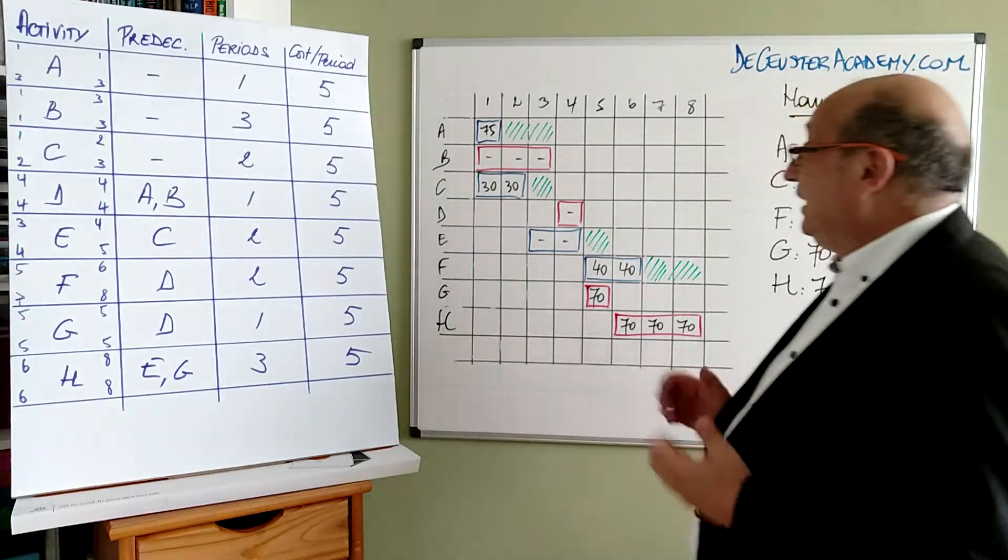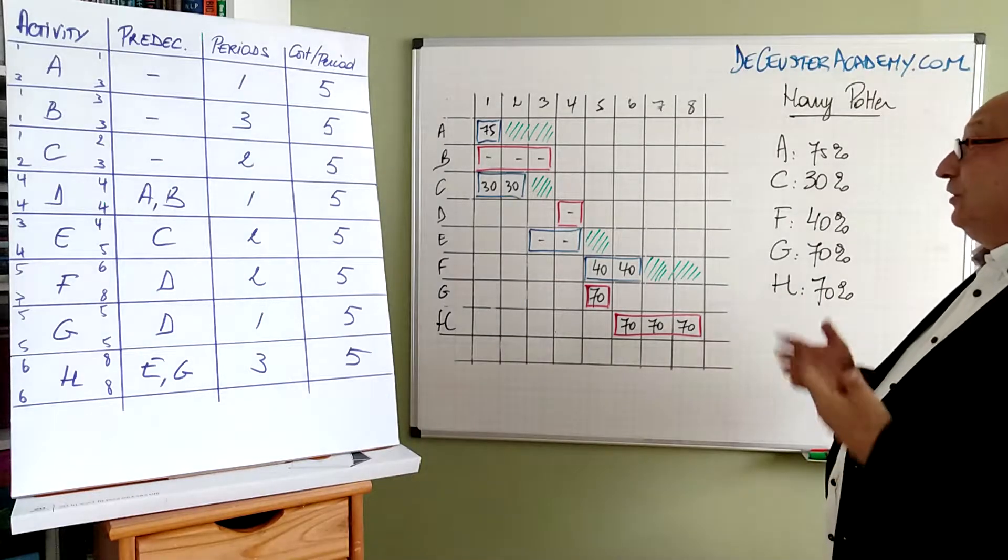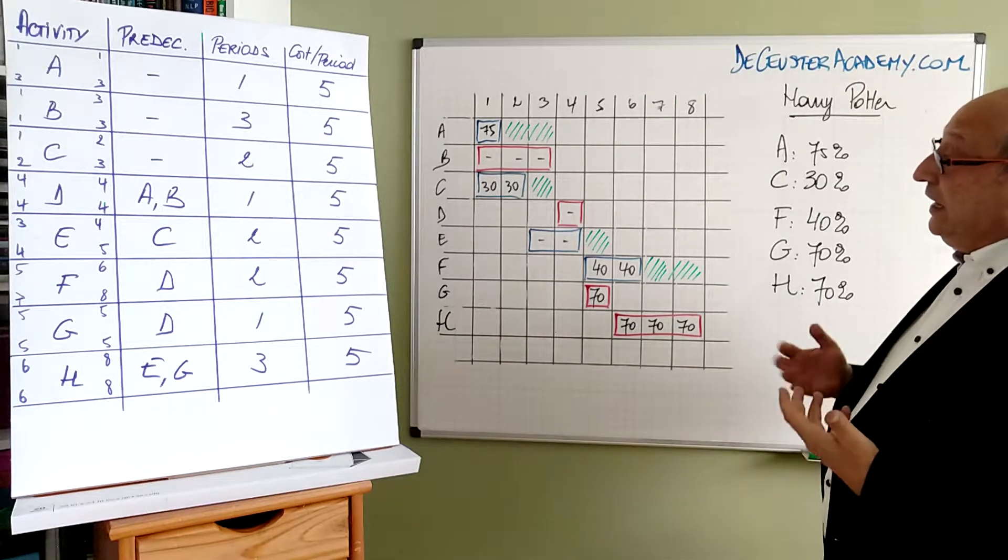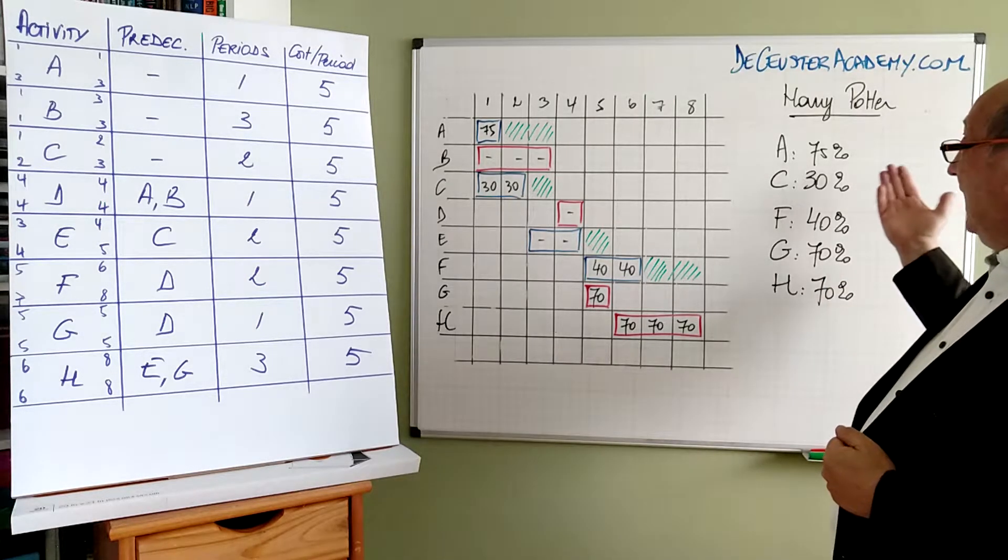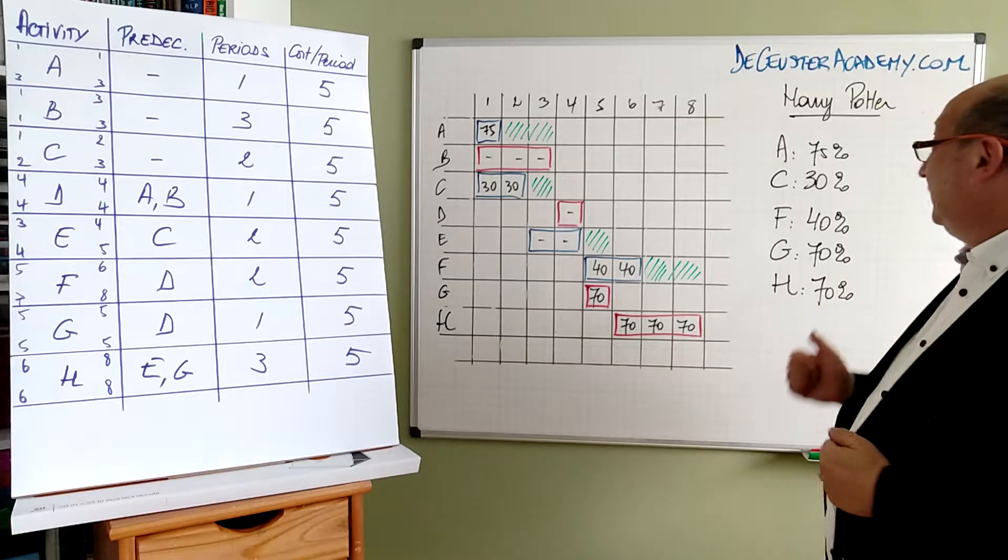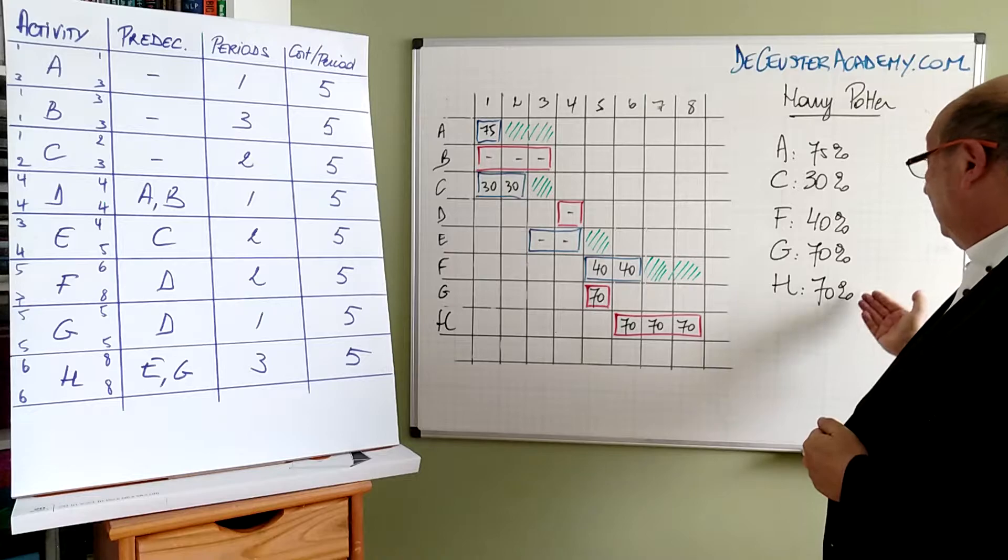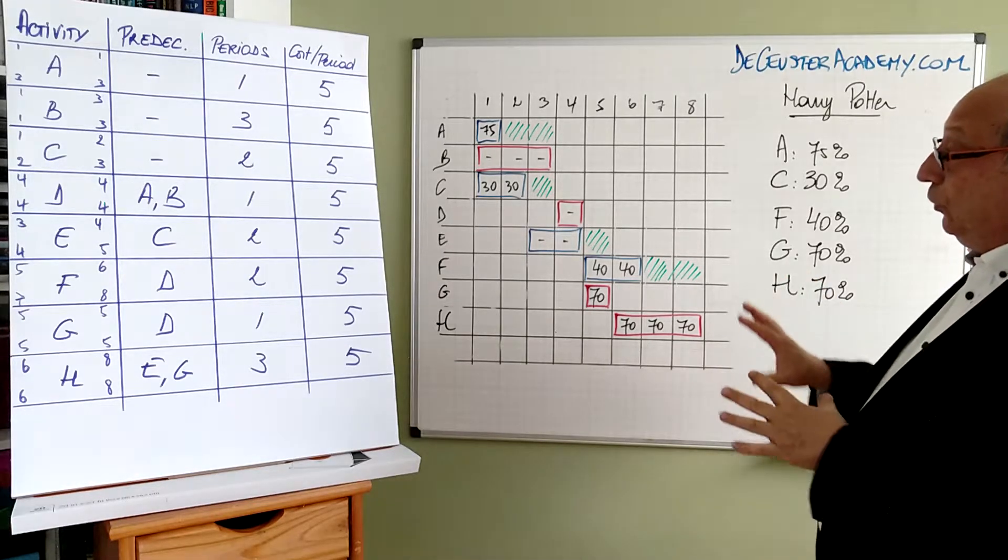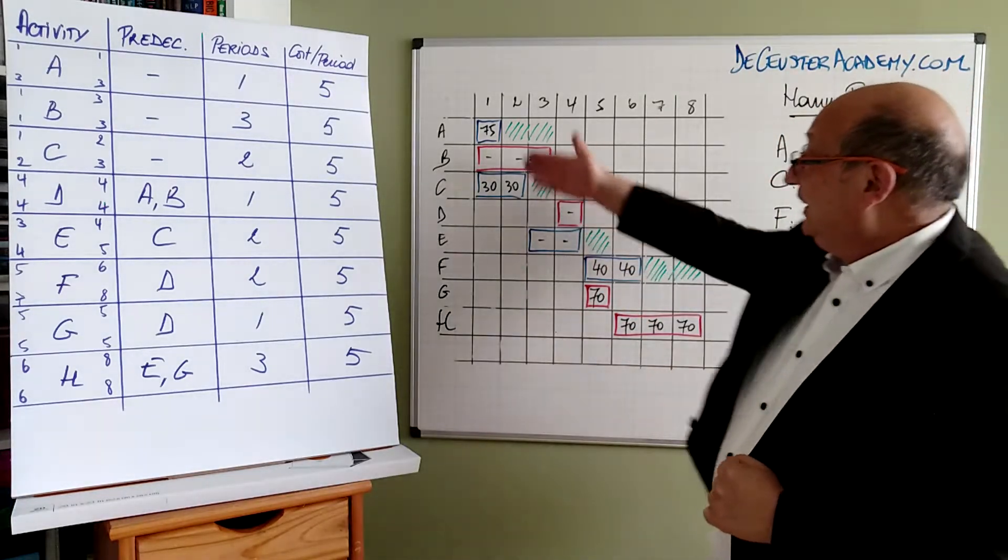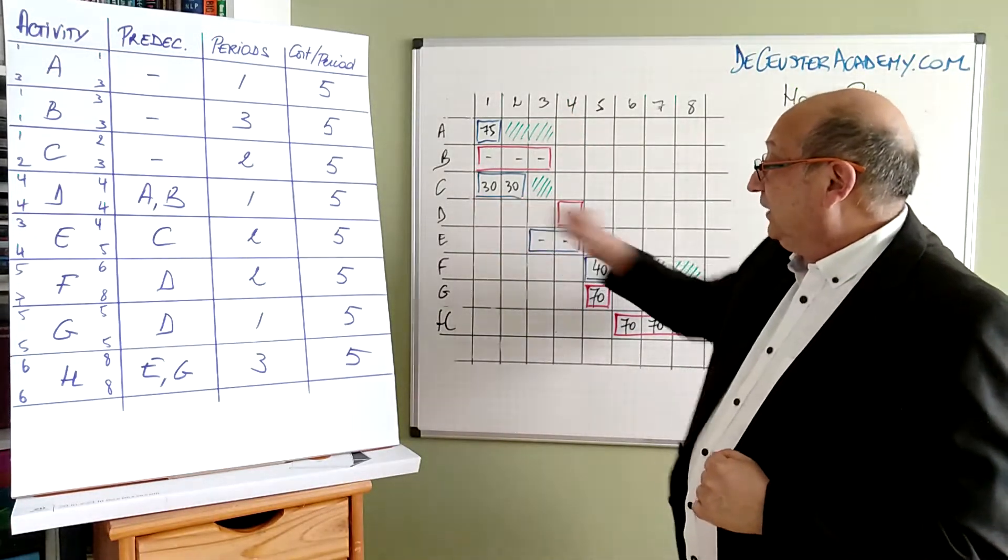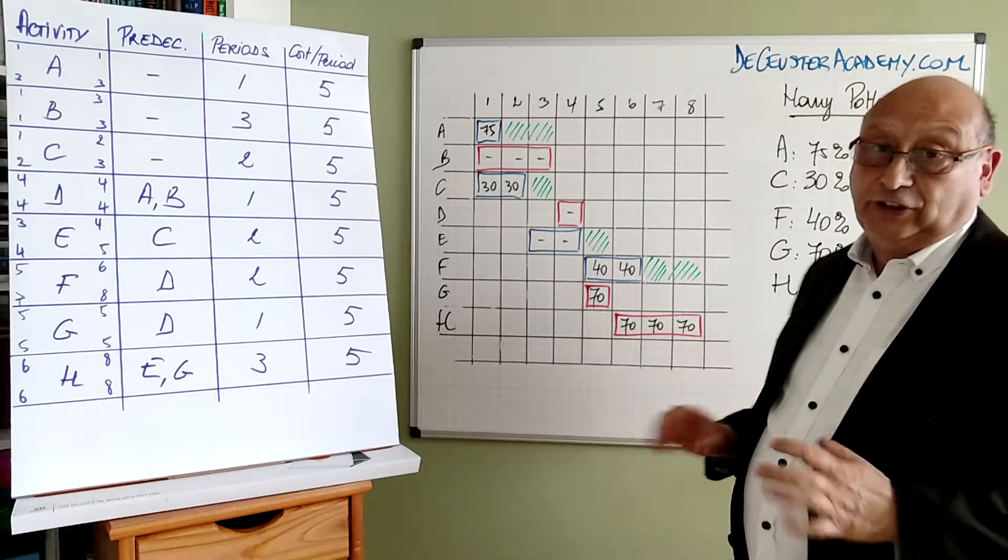Let's have a look at this table here. We have in fact our friend Harry Potter, our project colleague. And Harry is working on activity A for 75%, activity C for 30%, F for 40%, G for 70% and for H also 70%. We put those data in the sheet, in the Gantt chart and we see those A 75%, C 30%, F 40%, G 70% and H also 70%.